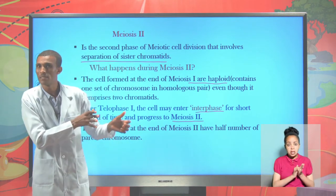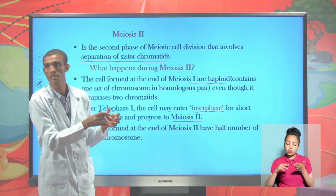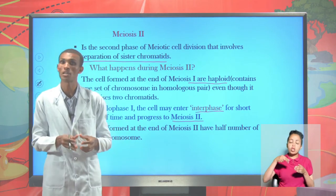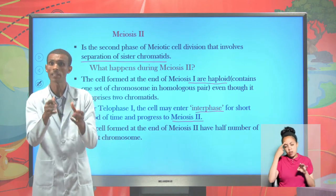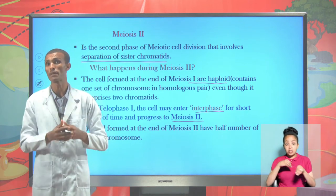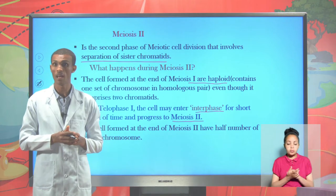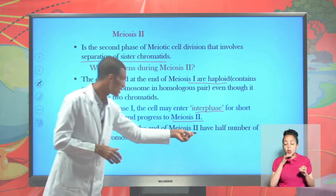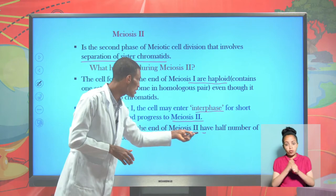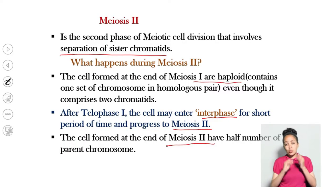The separation of homologous chromosomes that takes place during meiosis I is very important for the activities that take place during meiosis II. As a result, the number of daughter cells formed at the end of meiosis II reduces the number of parental chromosomes by half.